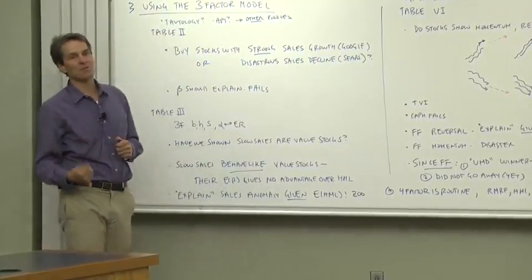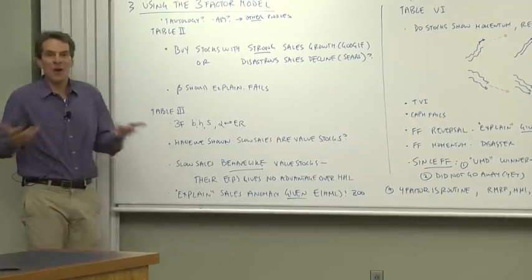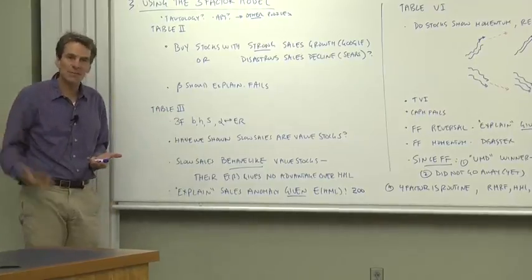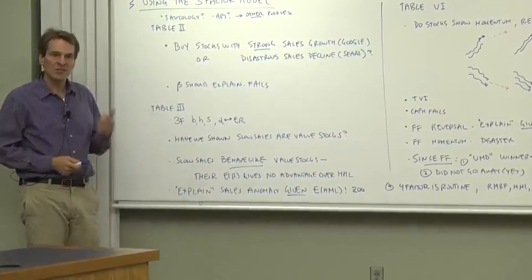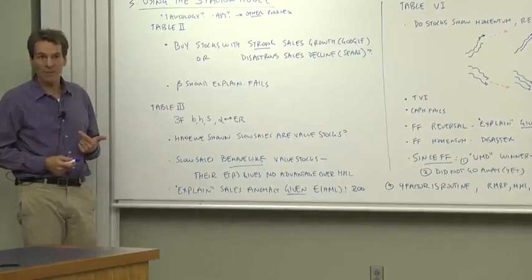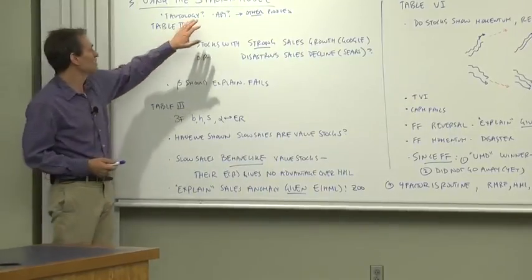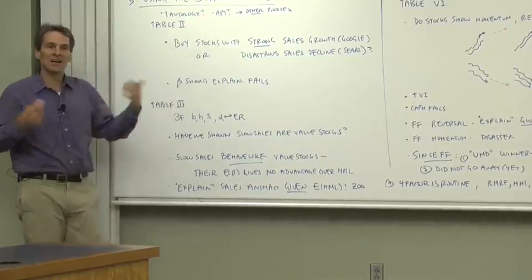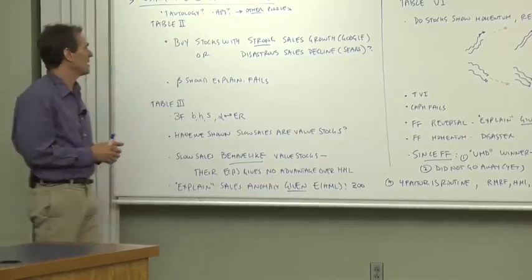That's what the CAPM was useful for. Not for explaining the market portfolio with the market portfolio, but how all the other anomalies of its day were explained by market betas. So let's go on and see the real important part of this paper, which is how does the size and book-to-market factors do in explaining a zoo full of other puzzles?